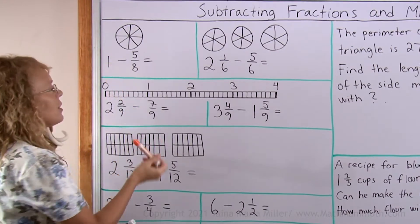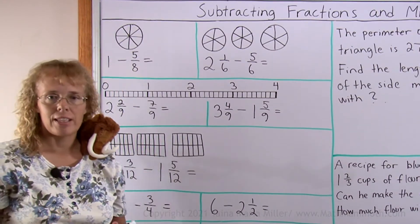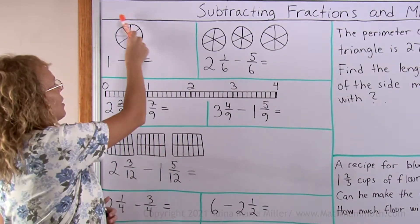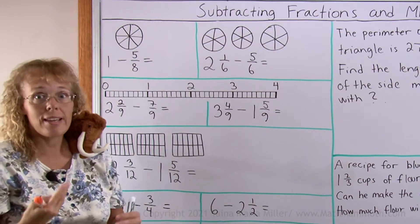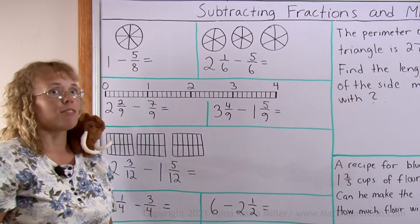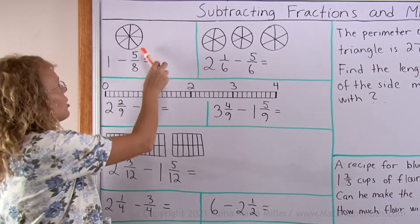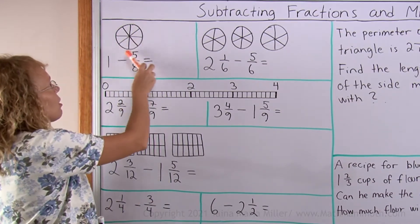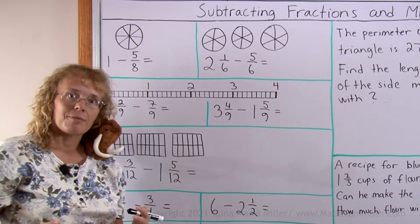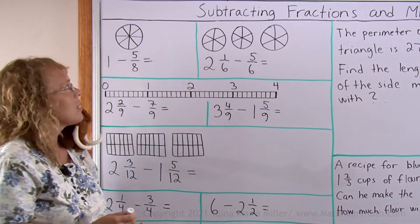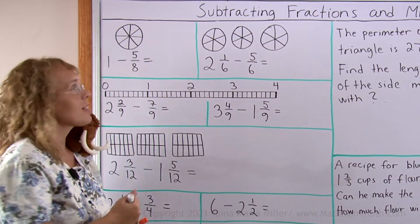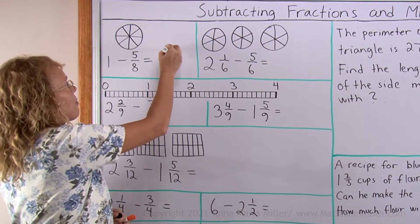Here, one take away 5 eighths. The one whole pie has to be divided into eighths so that you can take away five of them. Imagine if I color all of these and take away 5 eighths — then what is left? I hope you can see easily it is 3 eighths that is left.